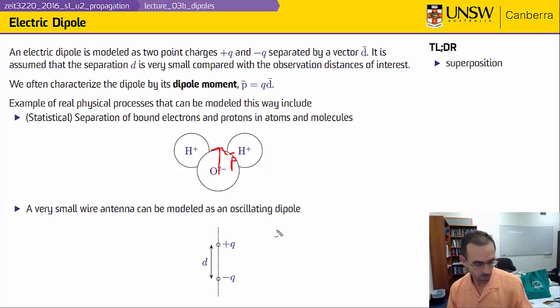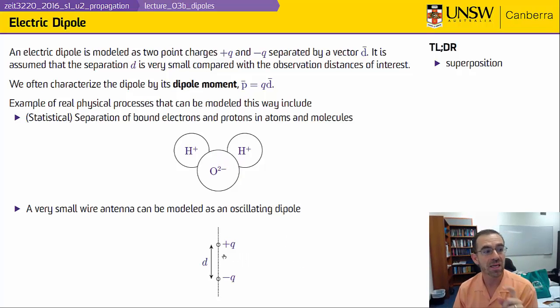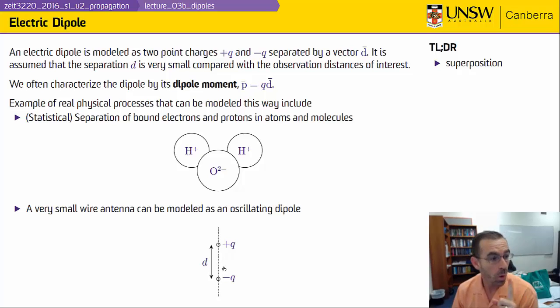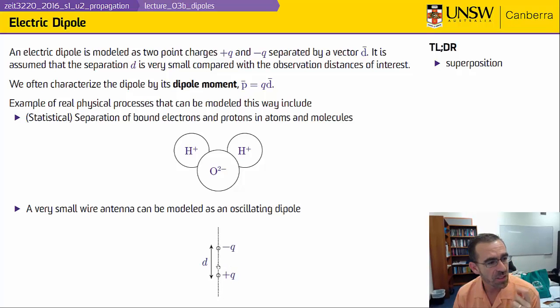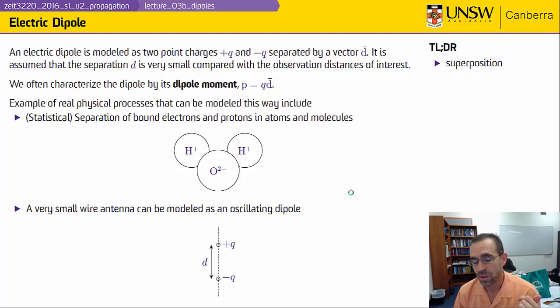Another very important example: a small wire antenna can be treated as two oscillating point charges where the distance between them varies. This sets up a current, and that current can radiate.